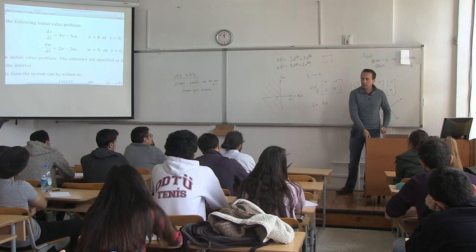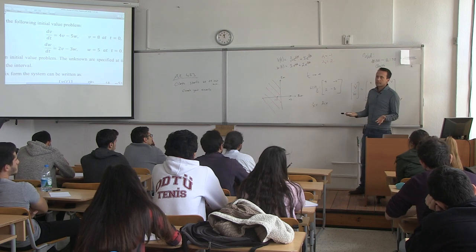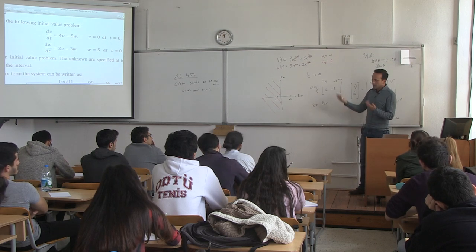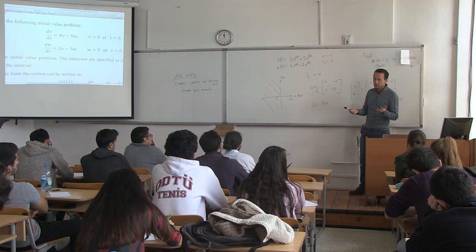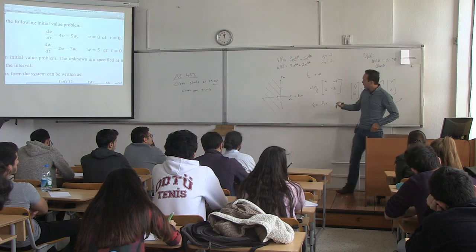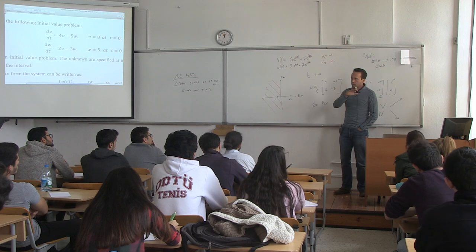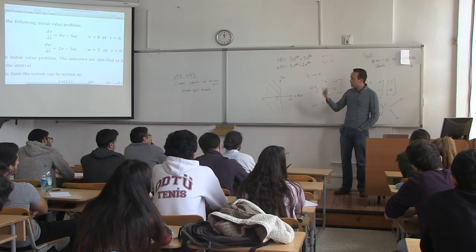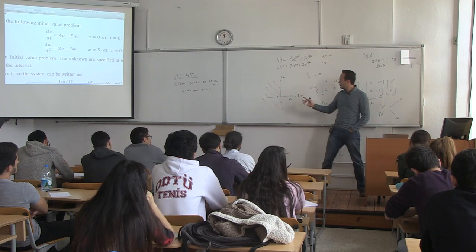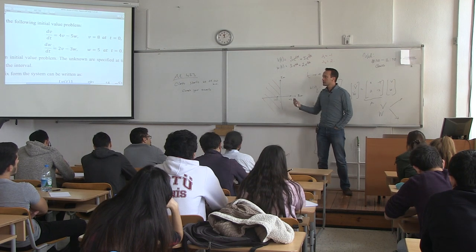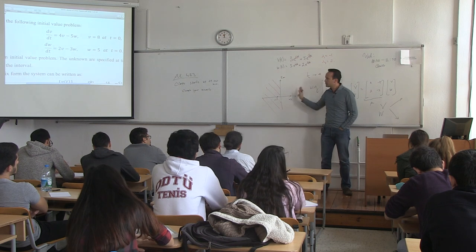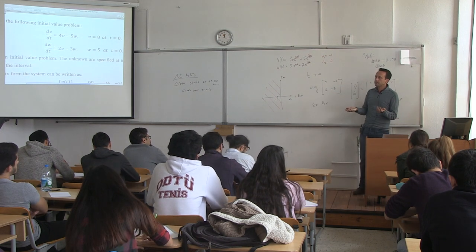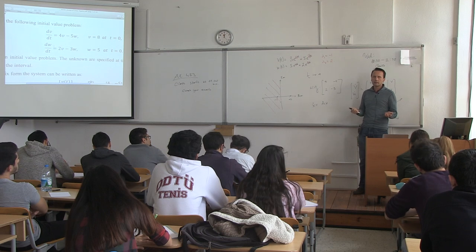This is very similar to what you did in system dynamics, where you found the transfer function, then the characteristic equation, and found its roots. What you did was look at the roots — if all roots were negative, you said the system is stable; if one root is positive, you said the system is unstable.